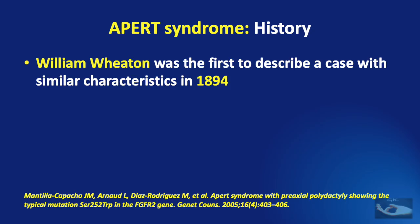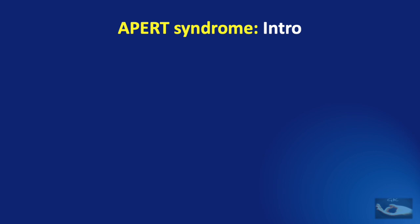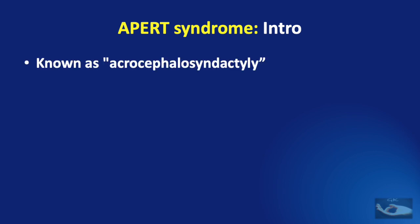William Wheaton was the first to describe a case with similar characteristics of what we know as Apert syndrome in 1894. But it was Eugene Apert, a French physician in Paris, who described nine collected cases in 1906. Apert syndrome is otherwise known as acro-cephalo-syndactyly.